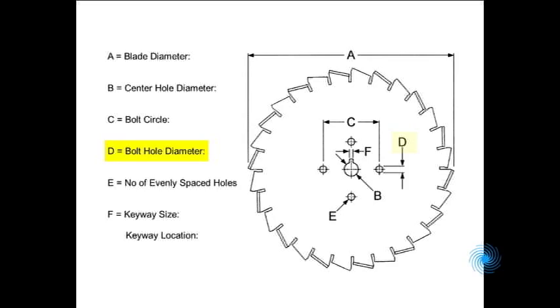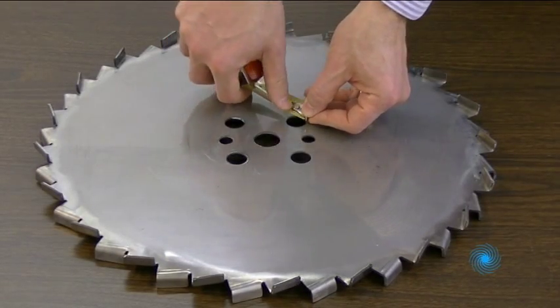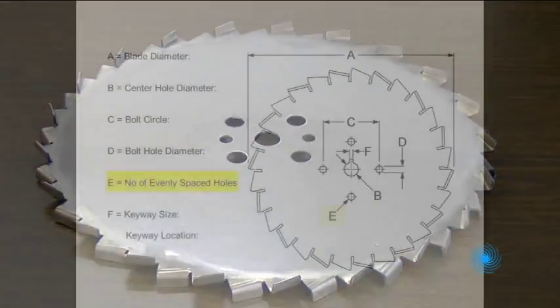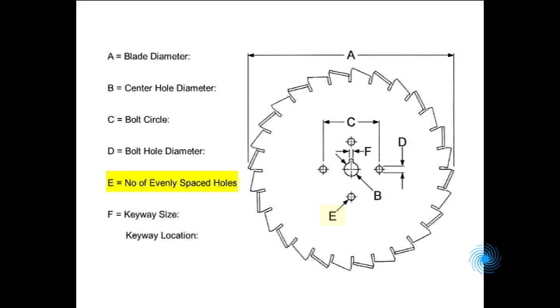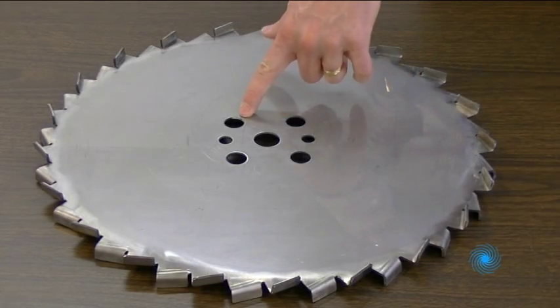Dimension D is the diameter of the holes in the pattern. E is the number of holes of diameter D cut on bolt circle C.